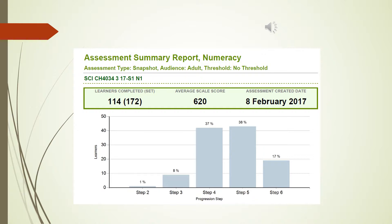This slide shows the results of a large learner group after all of them completed the questions. Their step level has been assessed, and this bar chart shows how many of the students were at step 2, step 3, step 4, and so on. The majority of this learner group were in numeracy at step 4 and step 5, with a few on either side of those two step levels.